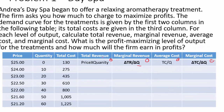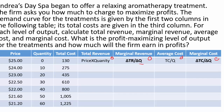As we go to the second row, total revenue is 24 (the price) times 10 (quantity), which equals 240. Then for marginal revenue, we go from zero to 240, so that's 240 minus zero divided by 10 minus zero (the change in quantity), which equals 24.